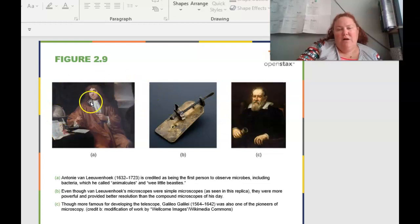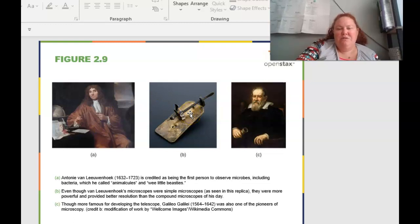A couple different important dudes here. Unfortunately girls didn't ever get really any of the credit, they were girl scientists too, just saying. But anyway, the ones that we're going to talk about are Leeuwenhoek, and he's credited as being the first person to observe microbes, which includes bacteria. And he called these bacteria animalcules and wee little beasties, which is kind of cute if you think of it.